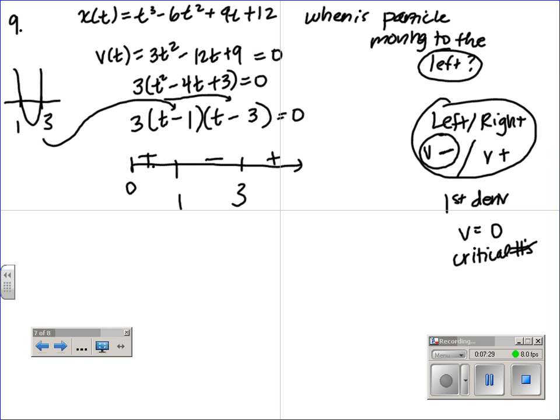If I put a 4, I get positives. So this function is going to the right, or increasing, and then decreasing, or to the left, and then increasing, or to the right. So when is the particle moving to the left? From 1 to 3. It's the interval from 1 to 3, which is choice C.